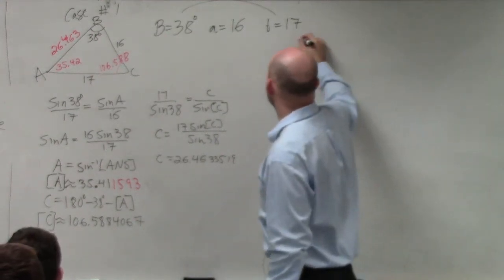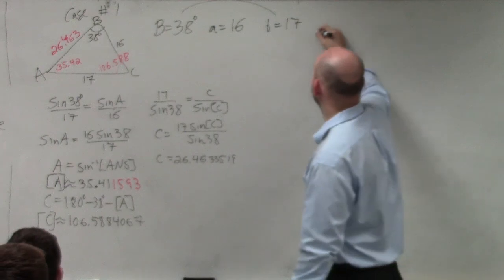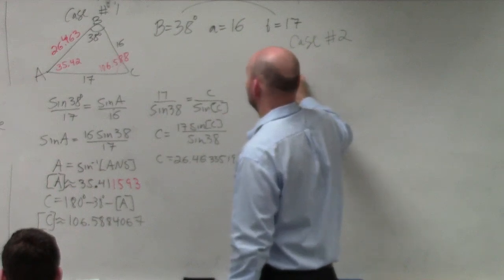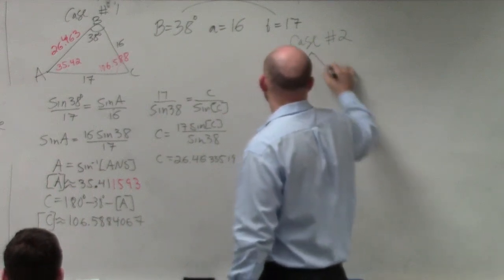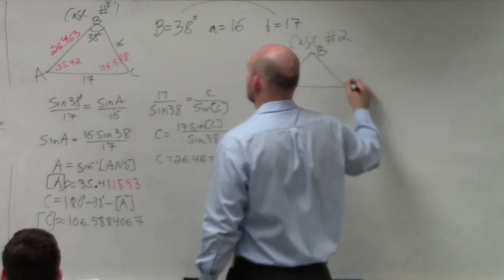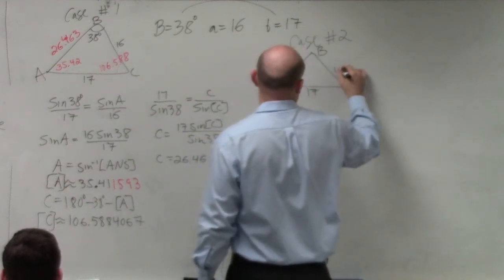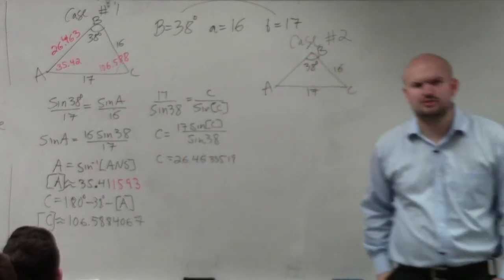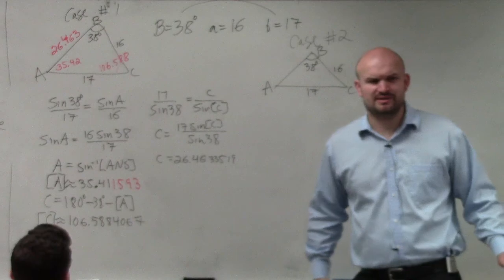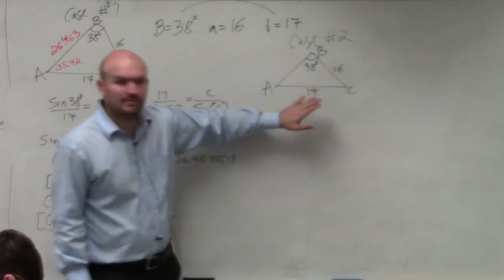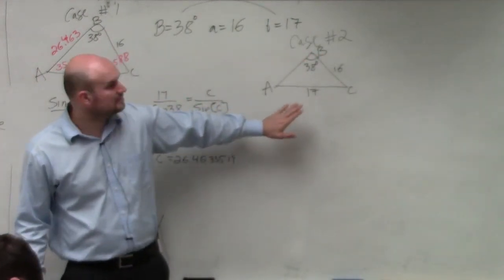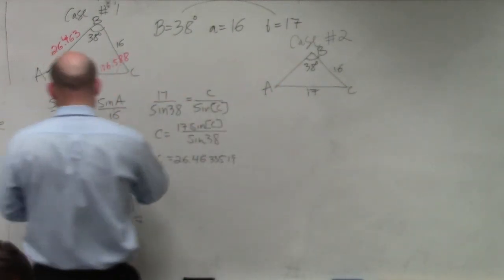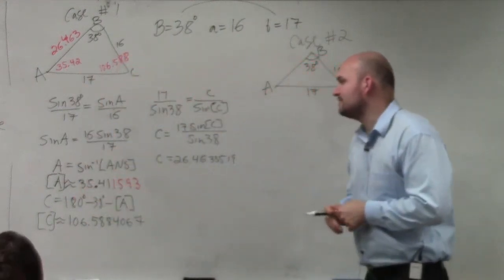So that was case number one. Let's do case number two. The triangle could look a little different, but I'll draw the same triangle. Looking at this, in case one we found A to be 35.4 degrees. Was that really the only answer? What we want to do is see if there's another possible value of A.